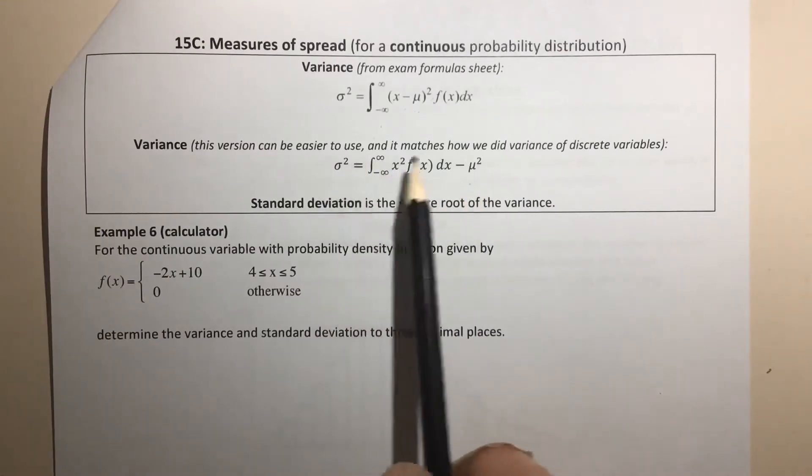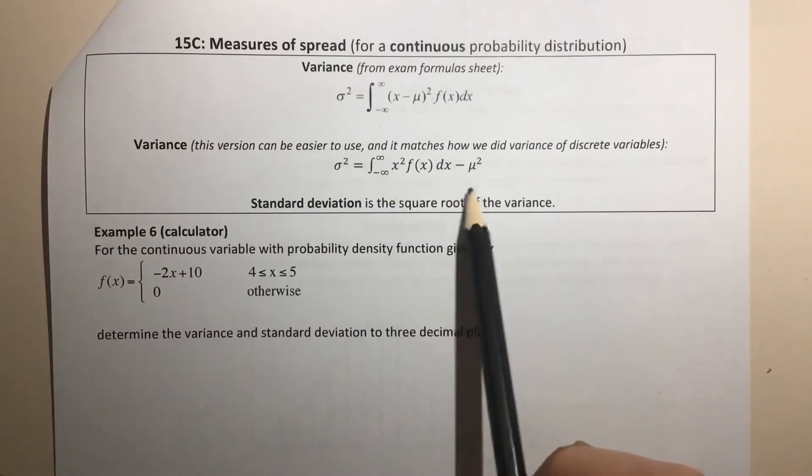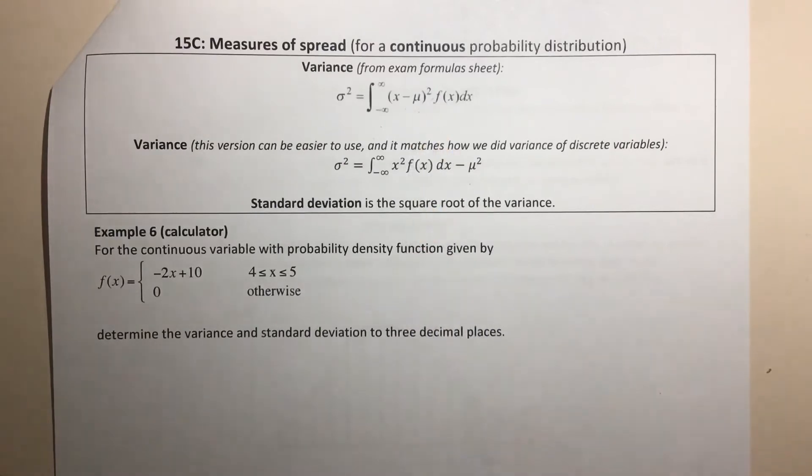One of the reasons I like this formula is because it matches how we did it with discrete variables, where it was the expected value of x² minus the expected value of x squared. Either version is going to give you the same answer. And as always, the standard deviation is the square root of the variance.